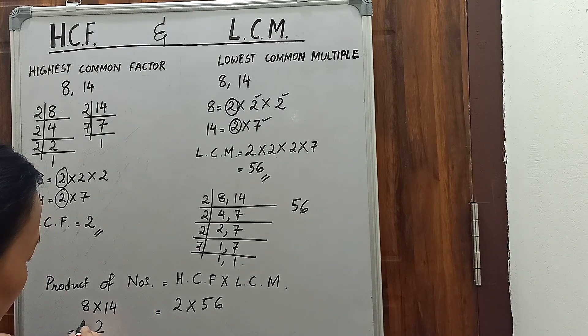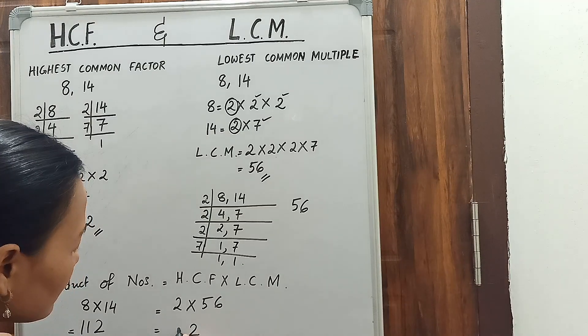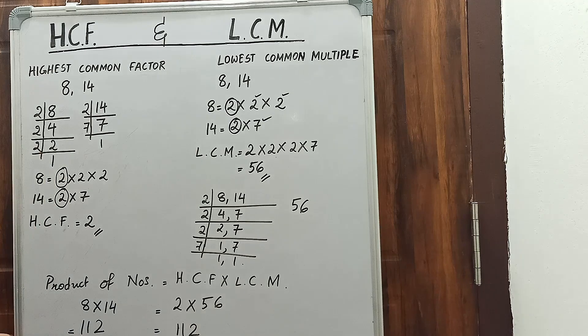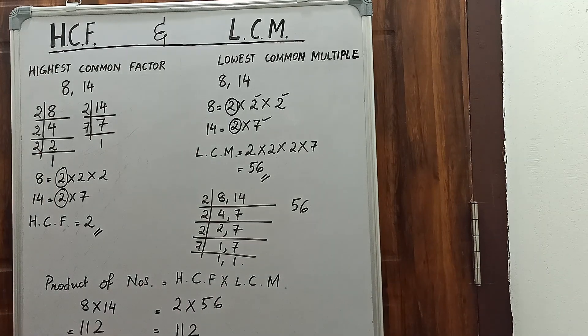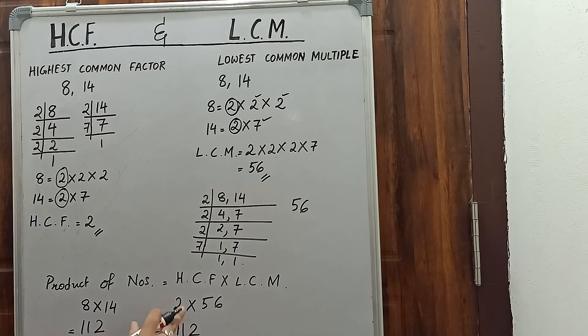8 into 14: 8 multiplied by 14, we get 112. So you will get the answer. Product of numbers equals to HCF into LCM by putting the numbers.